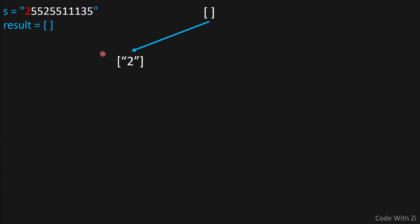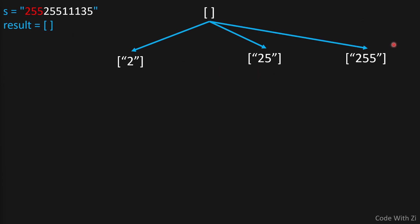In the beginning, let's see what happens if we consider 2 as our first part — so we add 2 to the empty array. We can also consider 25 as the first part, or 255. Each of these represents what happens if the first part is 2, 25, or 255. We can't go beyond this because 2552 exceeds 255, so the maximum length for each part is three digits.